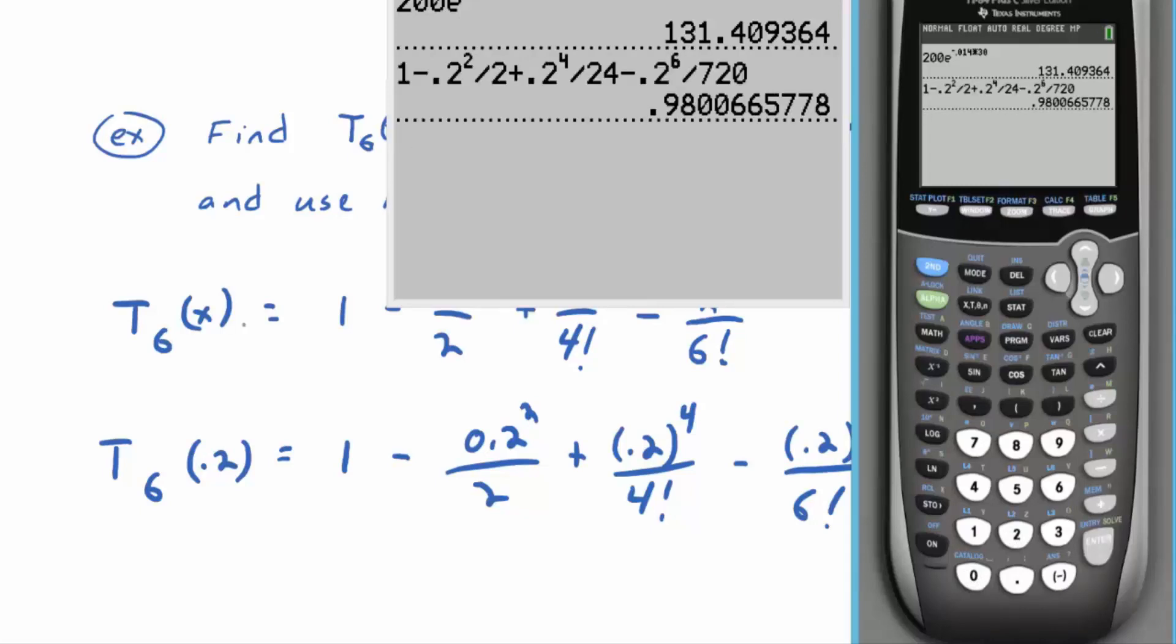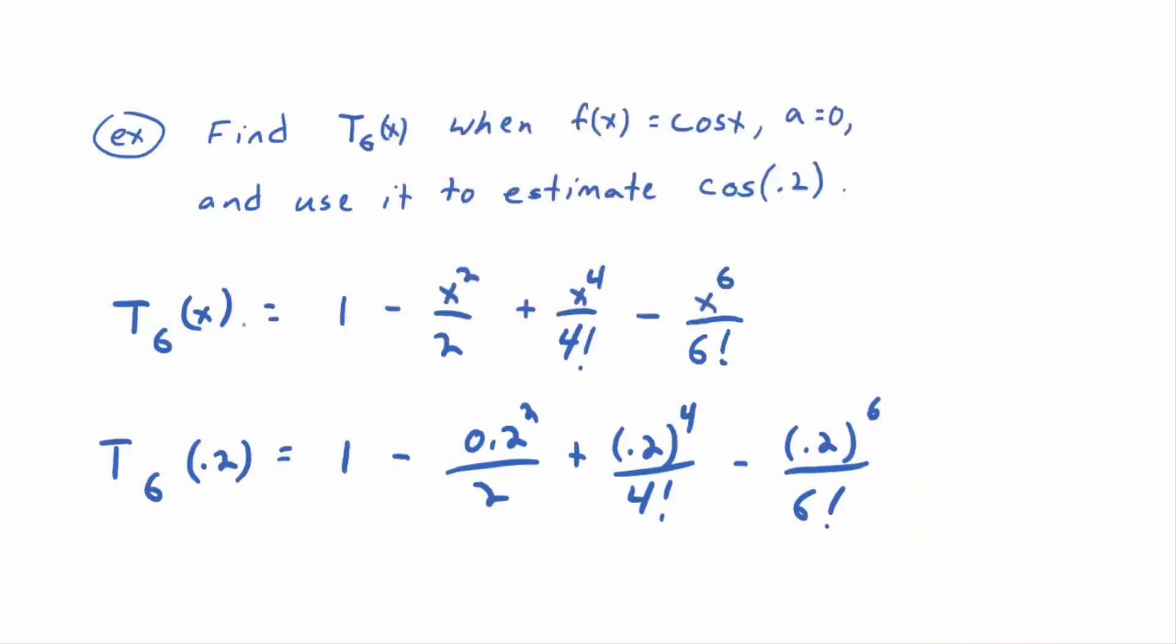Yeah, just make sure you punch in your calculator correctly—you probably just missed a button. Anyway, I'm getting this value on my calculator for the approximation: 0.9800665778. That's what the calculator spit out.